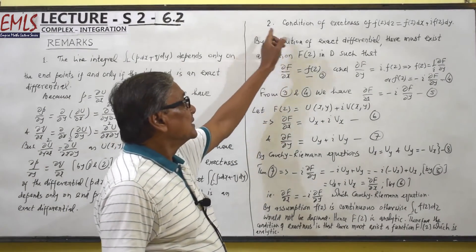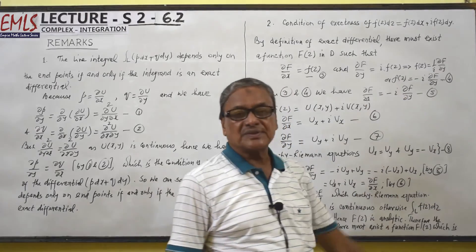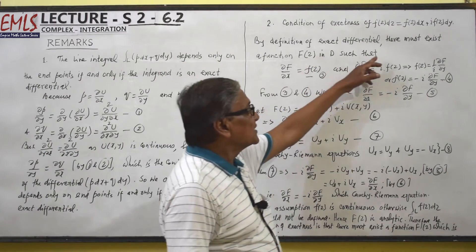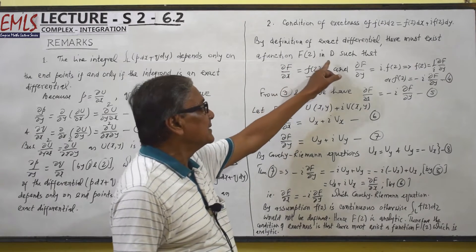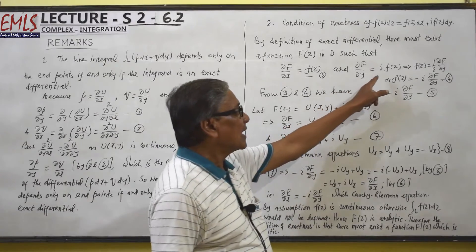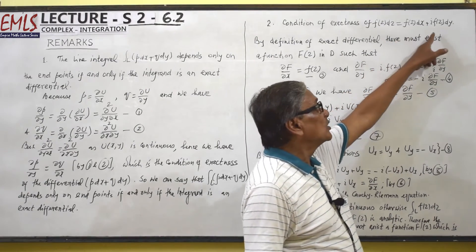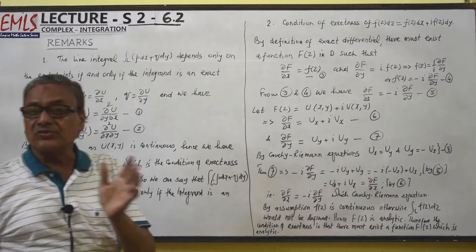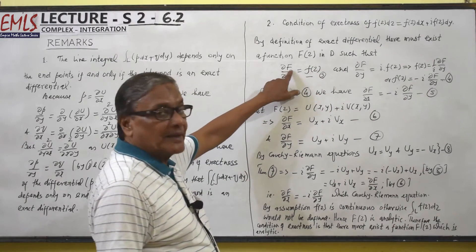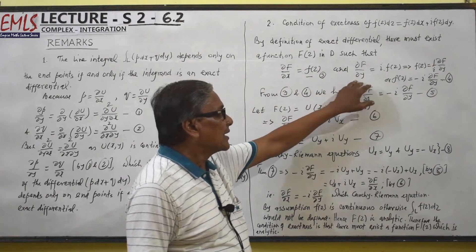Remark number 2: the condition of exactness of f(z)dz, which equals f(z)dx plus i·f(z)dy. We want to find the condition of exactness of this differential. By definition of exact differential, there must exist a function capital F(z) in D such that ∂F/∂x equals f(z) (equation 3) and ∂F/∂y equals i·f(z), because if expressed in the form p dx plus q dy, then p will be f(z) and q will be i·f(z). Here in place of u we have capital F, so ∂F/∂x equals f(z) and ∂F/∂y equals i·f(z).